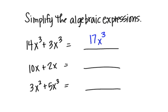In my next problem, I see 10x plus 2x. So that would give me a 12x. In my next problem, I have 3x squared plus 5x cubed, and those are not like terms. Since they are not like terms, you cannot simplify.